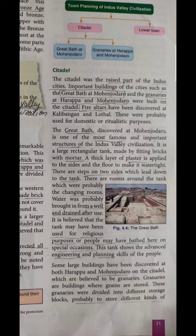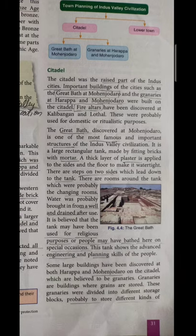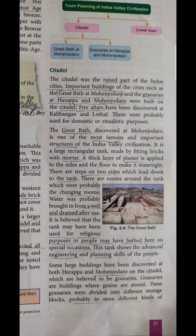The buildings discovered at both Harappa and Mohenjodaro on the Citadel are believed to be granaries. The granary was used for storage purposes — just like we need storage today, the people of that time used the granaries to store grain.